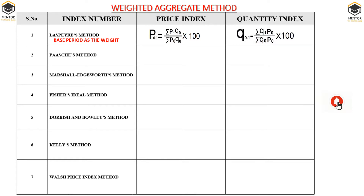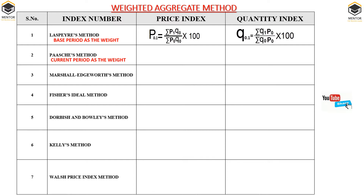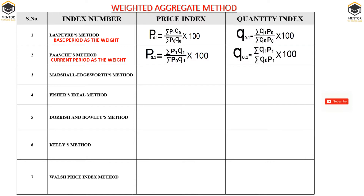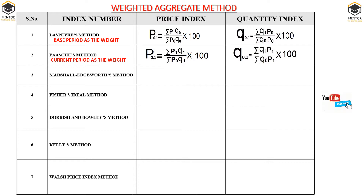Next formula we have is Paasche's method. Here the author has given the weight to the current year. In Laspeyre's the weight was given to the base year, but Paasche's gives the weight to the current year. So the formula is same as Laspeyre's but instead of Q0 we have Q1 in price index, and in quantity index instead of P0 we have P1. If you remember these two formulas — Laspeyre's and Paasche's — then all the other five index numbers are very easy to remember.